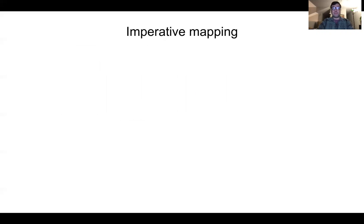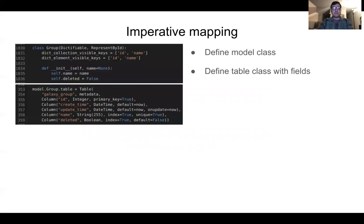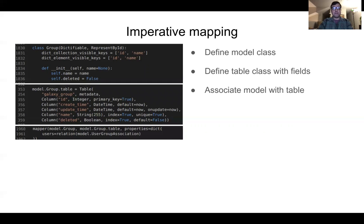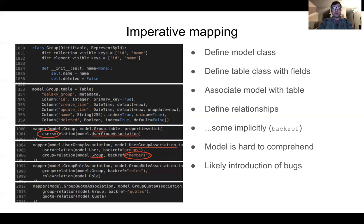Here's just one example of the improvements to the data model. In the current system, when we add a new model, we define the model class. However, that class definition does not include the attributes mapped to the fields in the database table. Instead, we define those attributes in a table class in a separate module. Furthermore, we need to explicitly associate the model class with this table object. We also need to define any relationships the model has with other models, with bi-directional relationships often defined implicitly. All this information is spread across several locations, and as a result, the model may be hard to comprehend. Furthermore, this leads to potential bugs that happen when we accidentally overwrite an existing relationship. Like in this very example, the relationship between user-group association and group is defined twice, once as members, once as users.